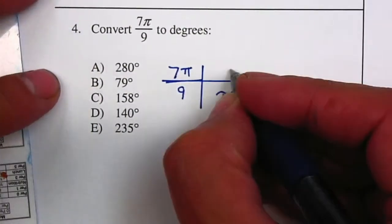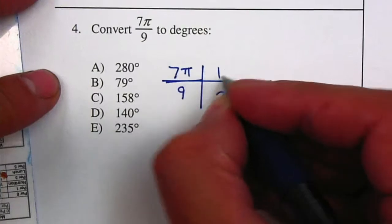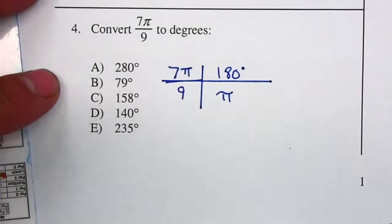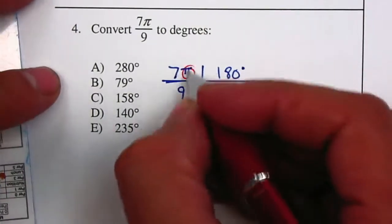And 1 pi is equal to how many degrees? 180 degrees. So therefore I can cancel my pi, it cancels out.